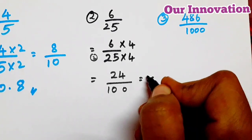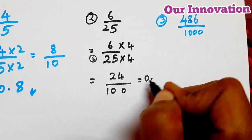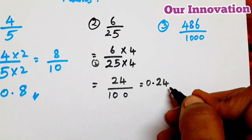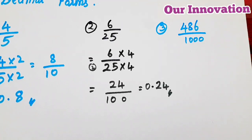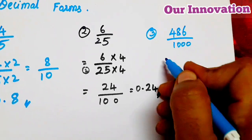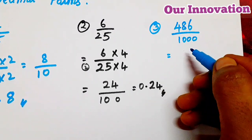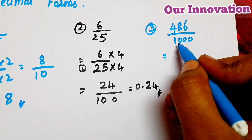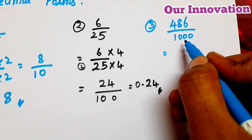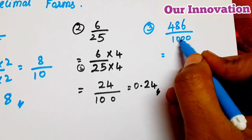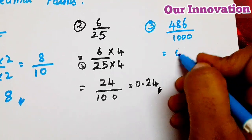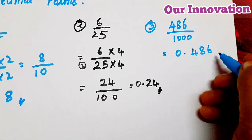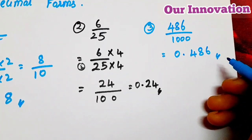What is the answer? 0.4. Any doubt? 0.486. So this is the decimal form.